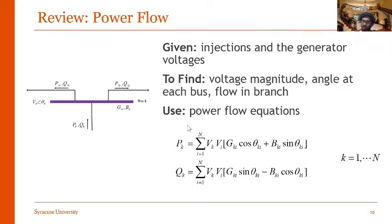The power flow equations at bus K: for example, the active power injection is a function of voltage at bus K and voltage at all buses connected to bus K using transmission lines. It's also a function of the line parameters G and B as well as the bus angle difference between K and I.